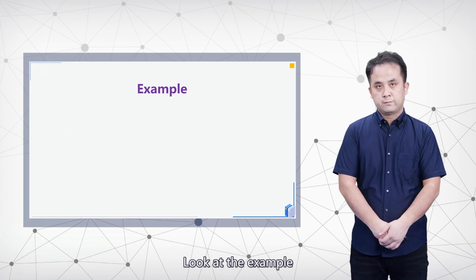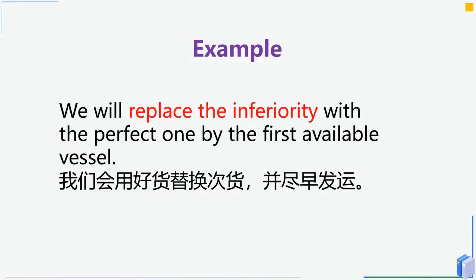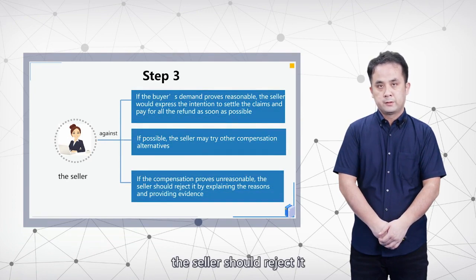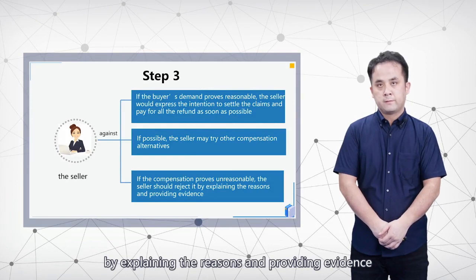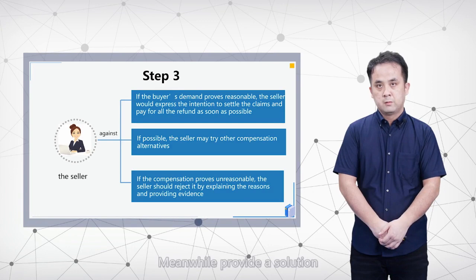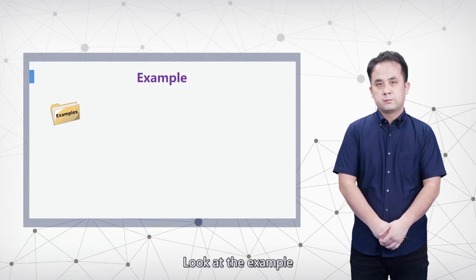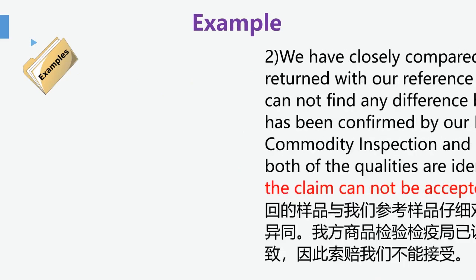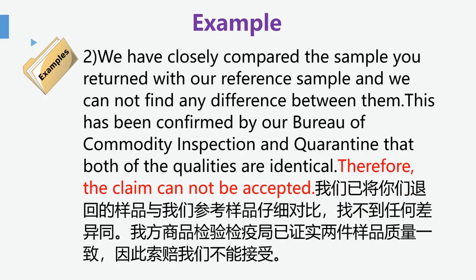For example: 'We will replace the inferior goods with perfect ones by the first available vessel.' If the compensation claimed proves unreasonable, the seller should reject it by explaining the reason and providing evidence rather than a simple rejection, and meanwhile provide a solution. For example: 'We find no grounds to compensate for the loss caused by the carrier. We have suggested you file the claim with the carrier as soon as possible.' Or: 'We have closely compared the sample you returned with our reference sample and cannot find any difference between them. This has been confirmed by our Bureau of Commodity Inspection and Quarantine that both are of identical quality. Therefore, the claim cannot be accepted.'